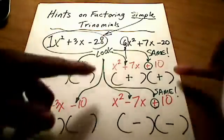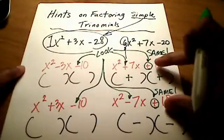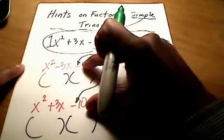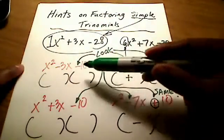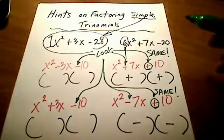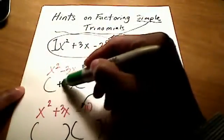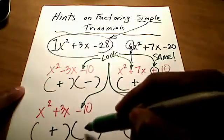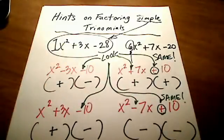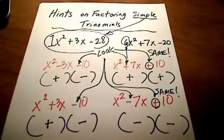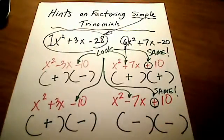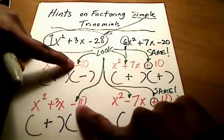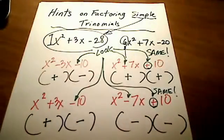Looking at these last terms first, I see a minus sign for both of them. Whenever that last term has a minus sign, automatically one of them is going to be plus and the other one is going to be minus — they're automatically going to have different signs. Quick summary: whenever there's a plus sign at the end, they're going to be the same. Whenever you see a minus sign at the end, they're going to be different — one is plus, one is minus. Might as well stick those signs in right now.